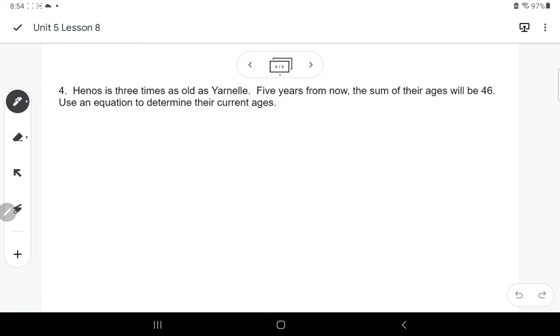Okay, one more example here. Hinos is three times as old as Yarnow. Five years from now, the sum of their ages will be 46. Use an equation to determine their current ages. So my recommendation, especially if you see things like this is five years from now, is to set up a little chart and talk about their age now.